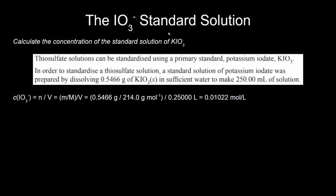Starting with determining our concentration of the primary standard, potassium iodate. We've got a mass here, we've got a volume — just like in our past video, this is really easy level 2 NCEA stuff which we're quite familiar with. All we've got to do is apply the same two usual equations, where C = n/V and moles = mass divided by molar mass. Combine those two equations, and we get our standard concentration.